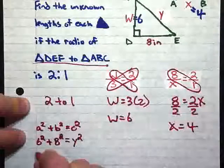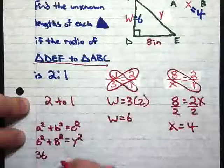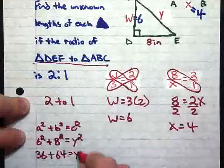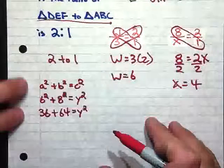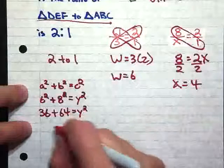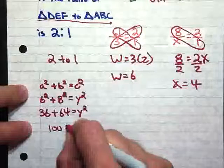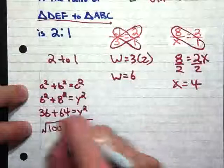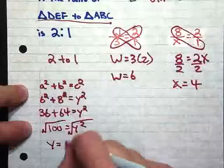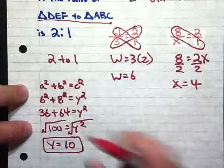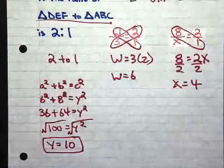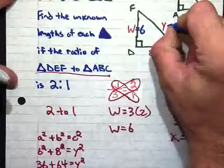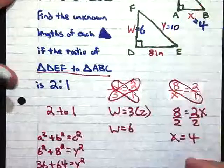So 6 squared gives us 36, plus 8 squared, which is 64, equals Y squared. 64 plus 36 gives us 100, equals Y squared. So we square root each side, and we get Y equals 10. So we have the solution for Y there. So let's go ahead and plug that in into our triangle up here. So Y equals 10.